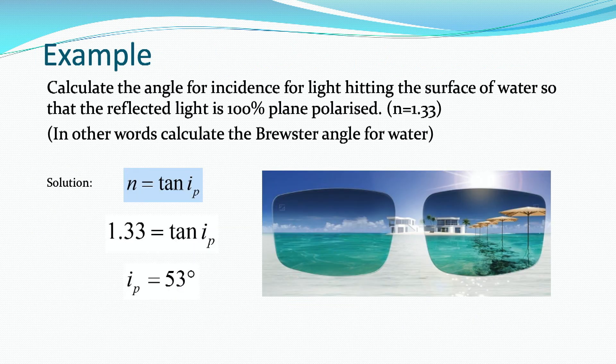Here's a worked example: calculate the angle of incidence for light hitting the surface of water so that the reflected light is 100% plane polarised. The refractive index of water is 1.33 from the datasheet. In other words, we have to calculate the Brewster angle for water. Using n equals tan i: shift-tan of 1.33 gives an answer of 53 degrees. That's why your lifeguard on the beach with his polaroid sunglasses sits up on a big chair — not just to get a good view, but to optimise the chance that the reflected glare is plane polarised so that his polaroid sunglasses can block that glare.